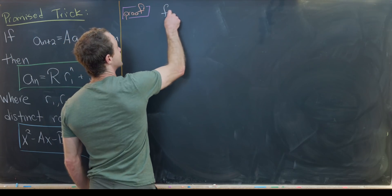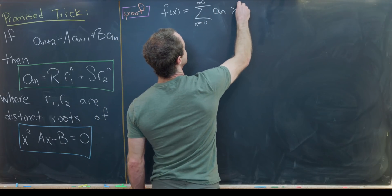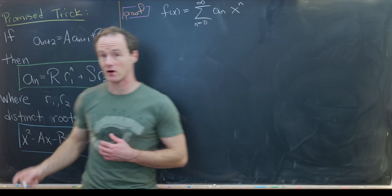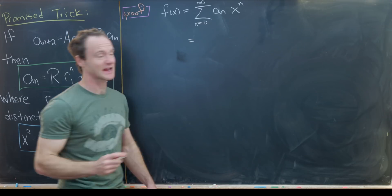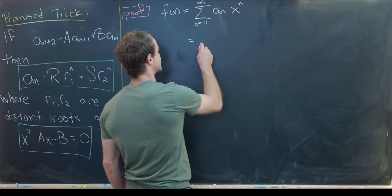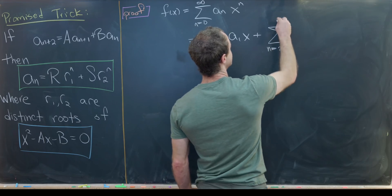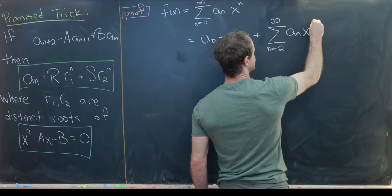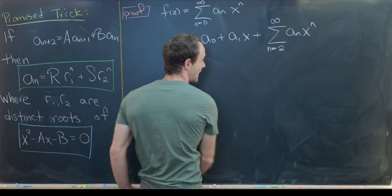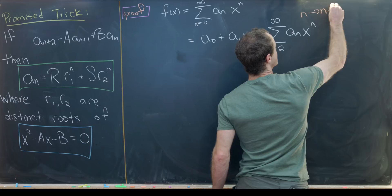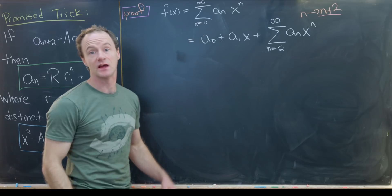Let's start by defining f(x) to be the sum as n goes from zero up to infinity of a_n · xⁿ — that's our generating function for our recursively defined sequence. We'll take out the zeroth and first terms, leaving the sum from n=2 to infinity of a_n · xⁿ. We can re-index this so that the n's are replaced with n+2, which is nice because then we have a_{n+2} and can apply our defining recursion relation.